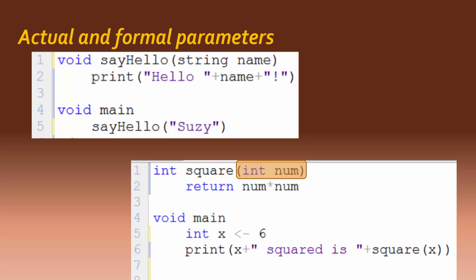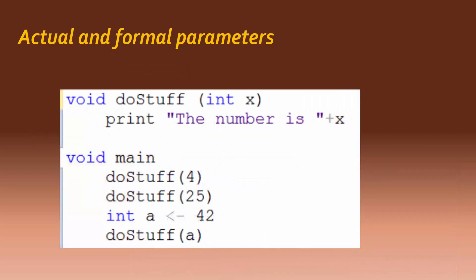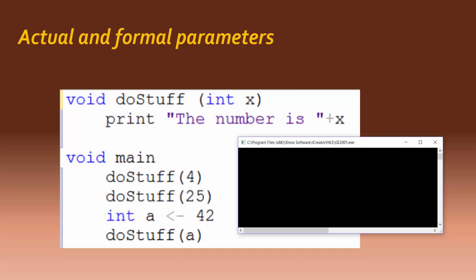In this next example, there are three calls to the DoStuff method, each with a different actual parameter, but each sending it to the same formal parameter X in the method header of the DoStuff method, resulting in the output sequence that you see here.